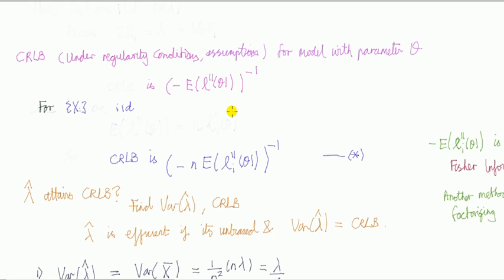It's a bit of a technical result here. You need to look in textbooks for conditions and assumptions—regularity conditions—so that you can use it. This Cramér-Rao lower bound says that suppose you have a model with a parameter theta, then the Cramér-Rao lower bound is given by this expression which is 1 over minus the expectation of the second derivative of the log likelihood.